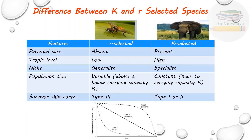Parental care is absent in R selected species because parents do not care for their babies. In K selected species, parental care is present — parents care for their young until they reach a particular age. Trophic level is low for R selected species and high for K selected species. Trophic level refers to the position in the food web.